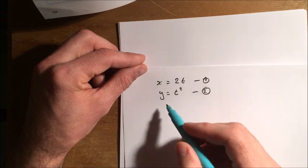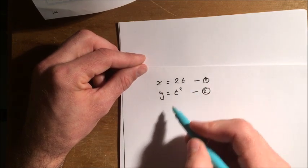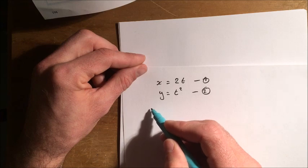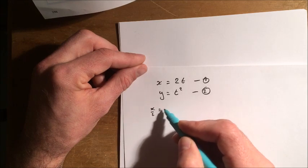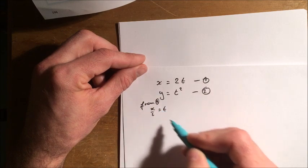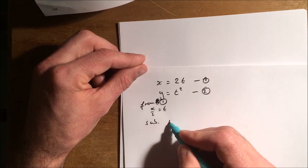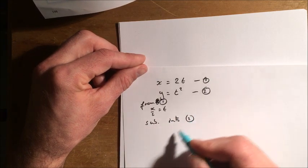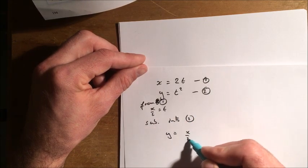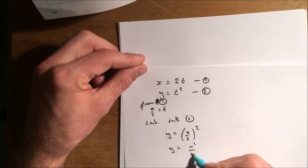So sometimes this will be easy, sometimes this will be really fiddly. So in this case, though, if you think about it, what we're trying to do is eliminate T. So I'm just going to treat these as simultaneous equations. X over 2 equals T. And that comes from equation 1. And then if I sub that into equation 2, I get that Y equals X over 2 all squared. So Y equals X squared over 4.